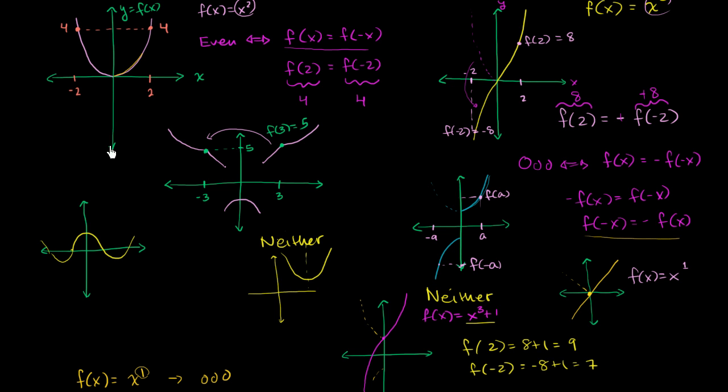you're calling it even because you're saying it has the same type of symmetry as x squared or x to an even power. So you group them all together as even functions.